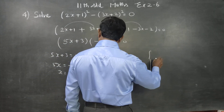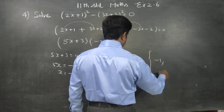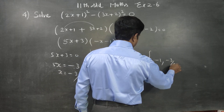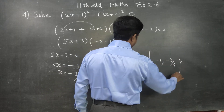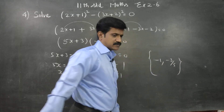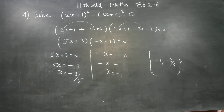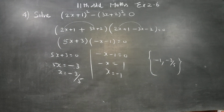Therefore, the solution set will be minus 1, minus 3 by 5 — or written as minus 3 by 5, minus 1. That is the solution set for you. Minus 3 by 5, minus 1. Thank you.